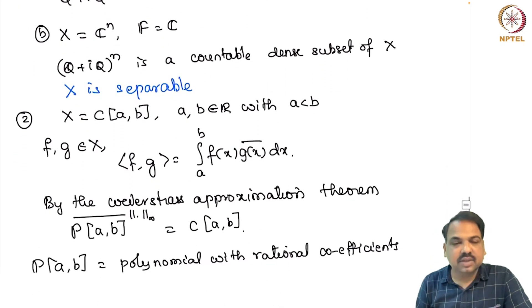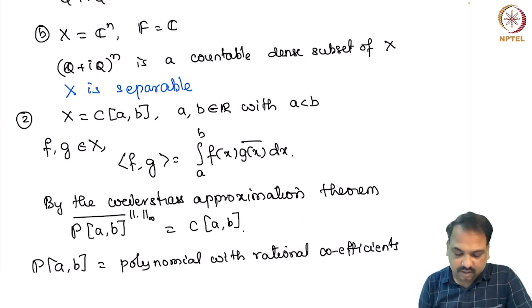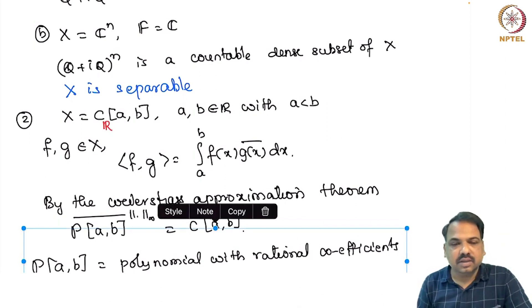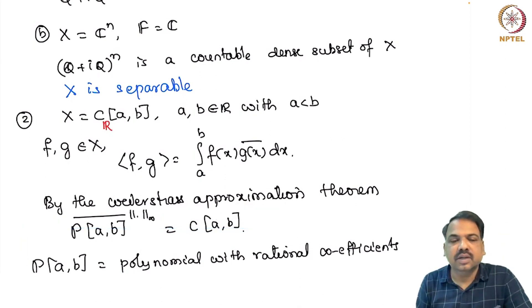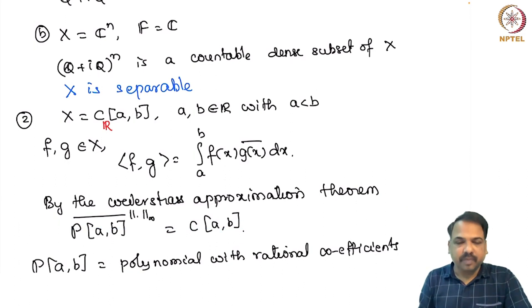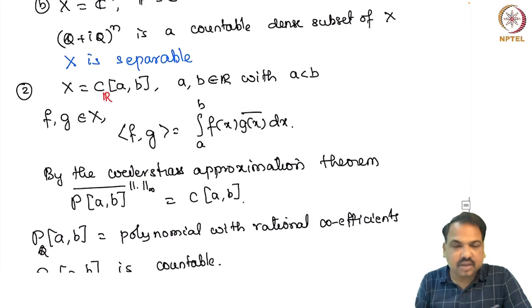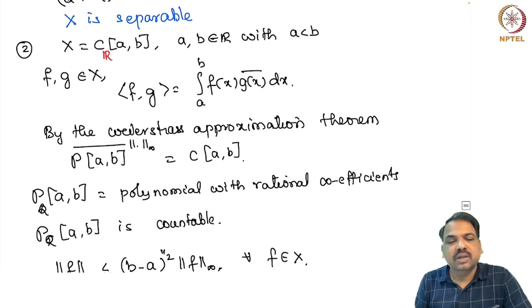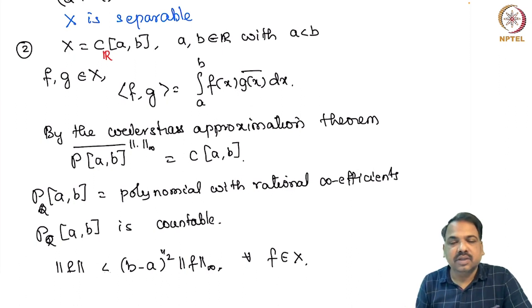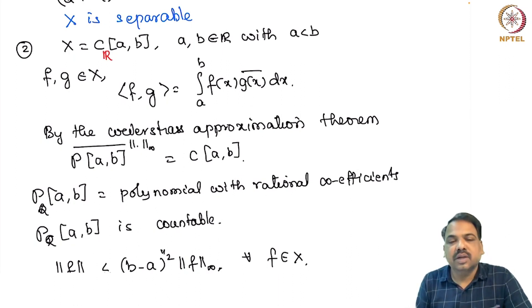Now let us look at X equal to C[a,b], where C[a,b] denotes the set of all continuous functions taking values in R. If you take F and G from X, then the inner product of F and G is given by the integral from a to b of F(x) times G(x) bar dx. By the Weierstrass approximation theorem, polynomials are dense in C[a,b] with respect to the supremum norm. Polynomials with rational coefficients form a countable dense subset of C[a,b]. Hence C[a,b] is separable with respect to the supremum norm.